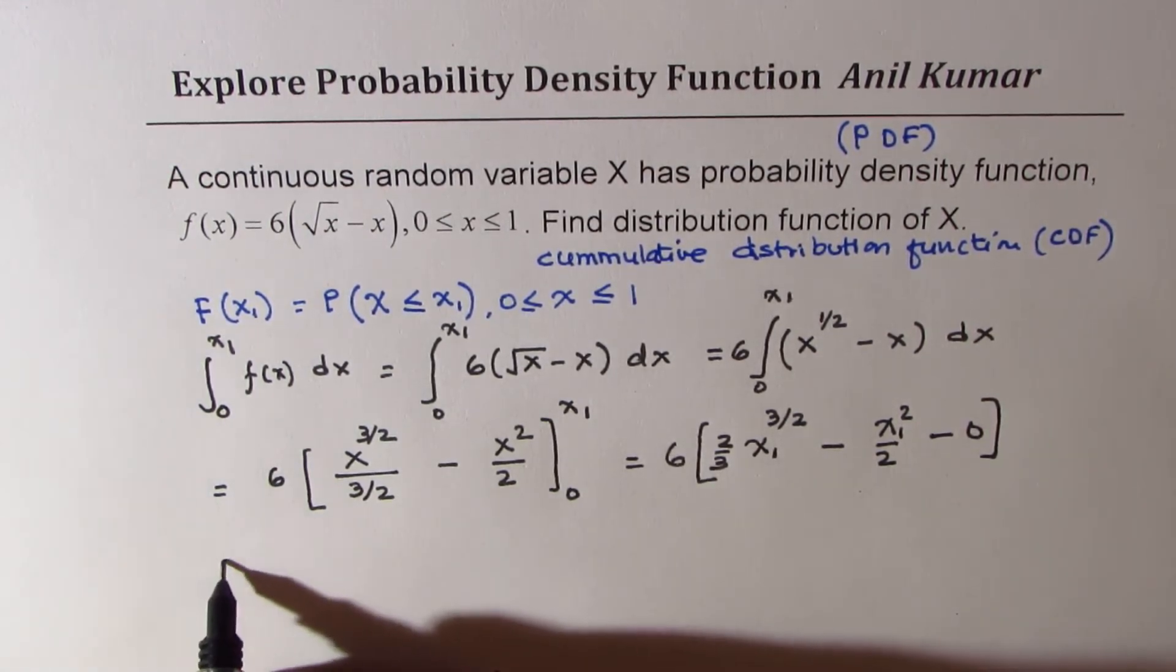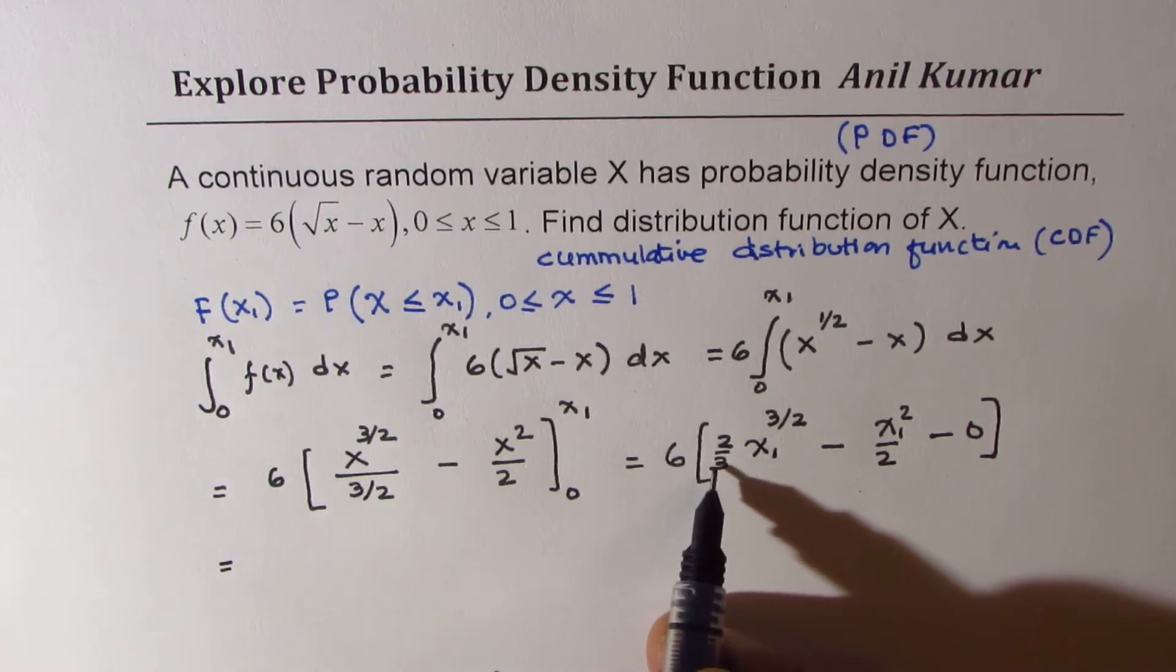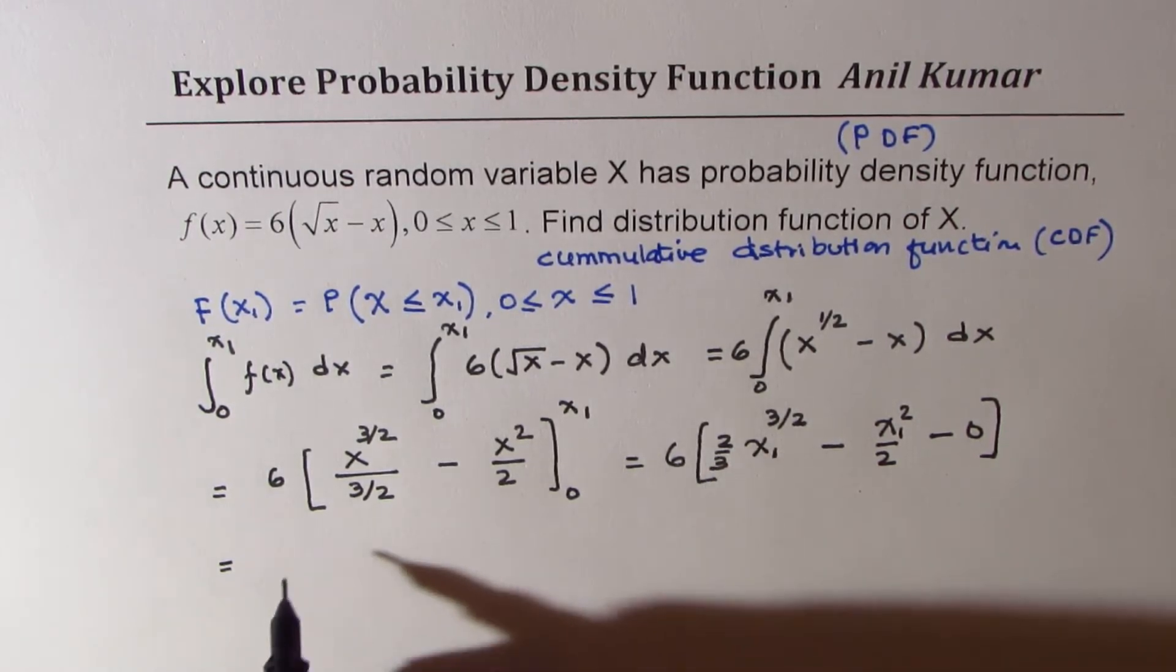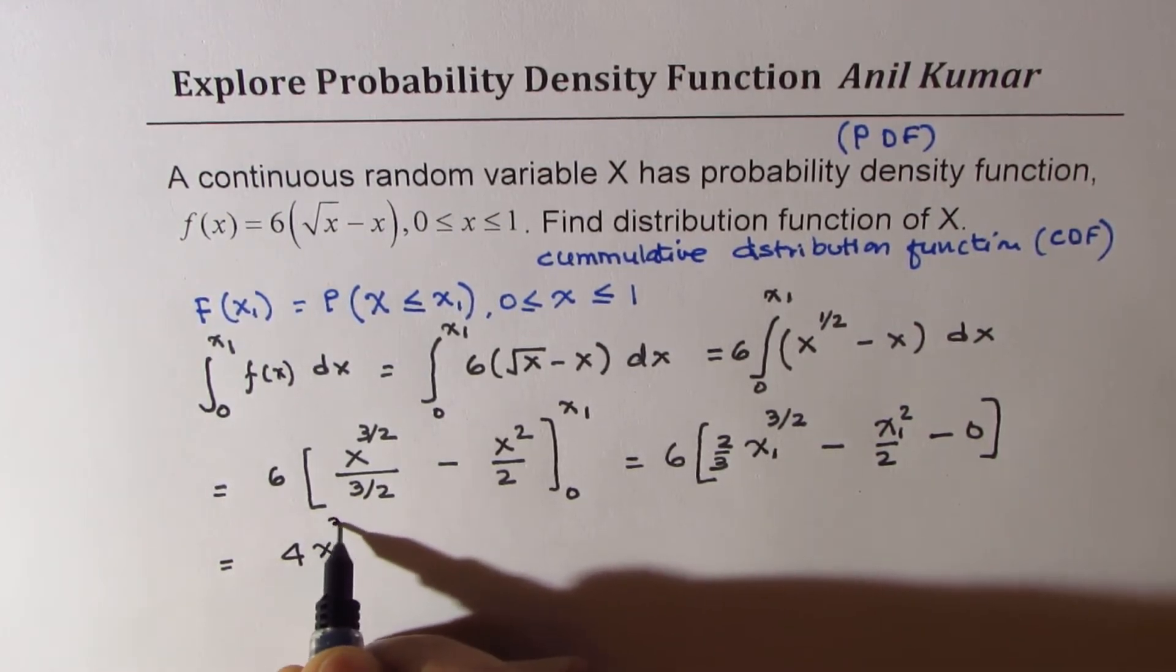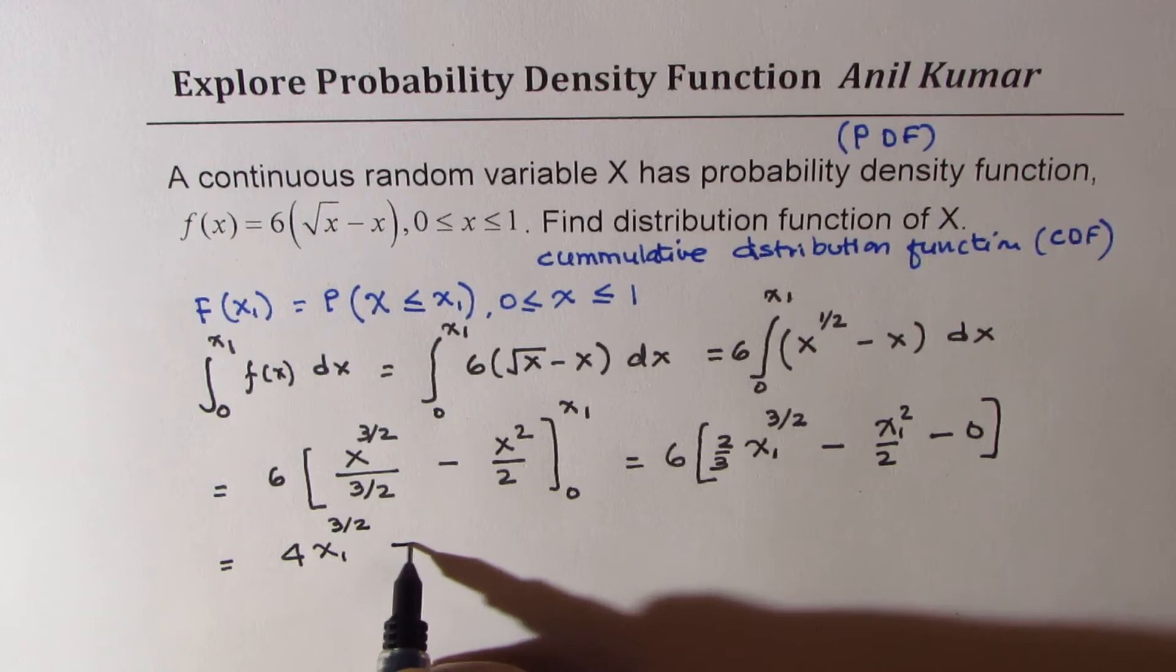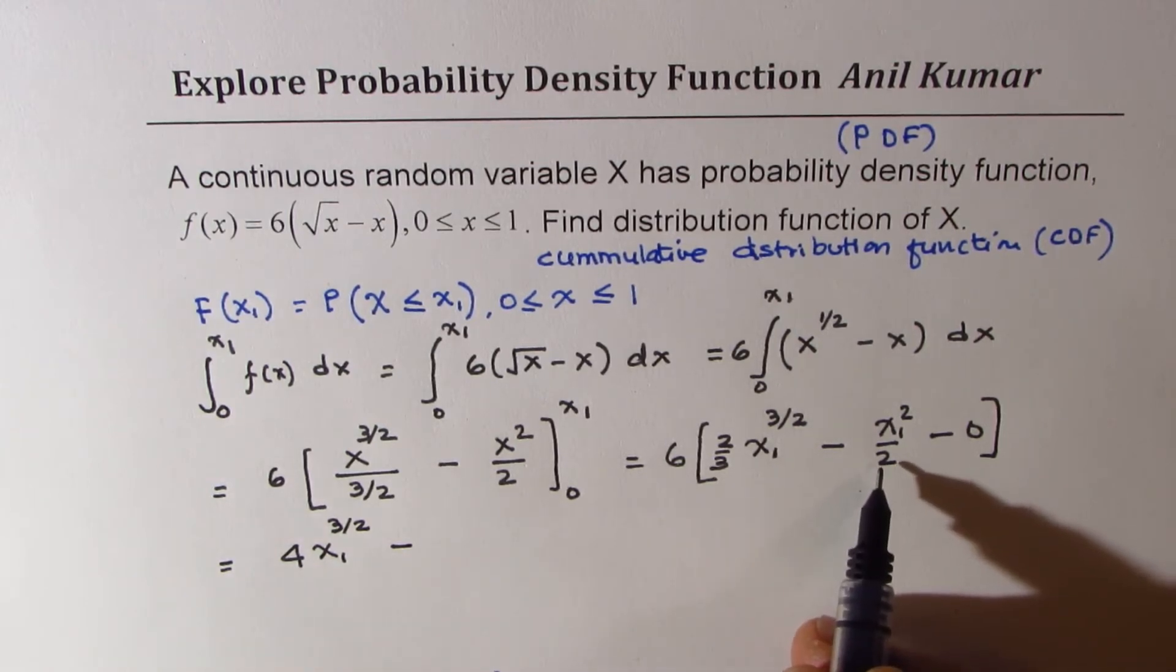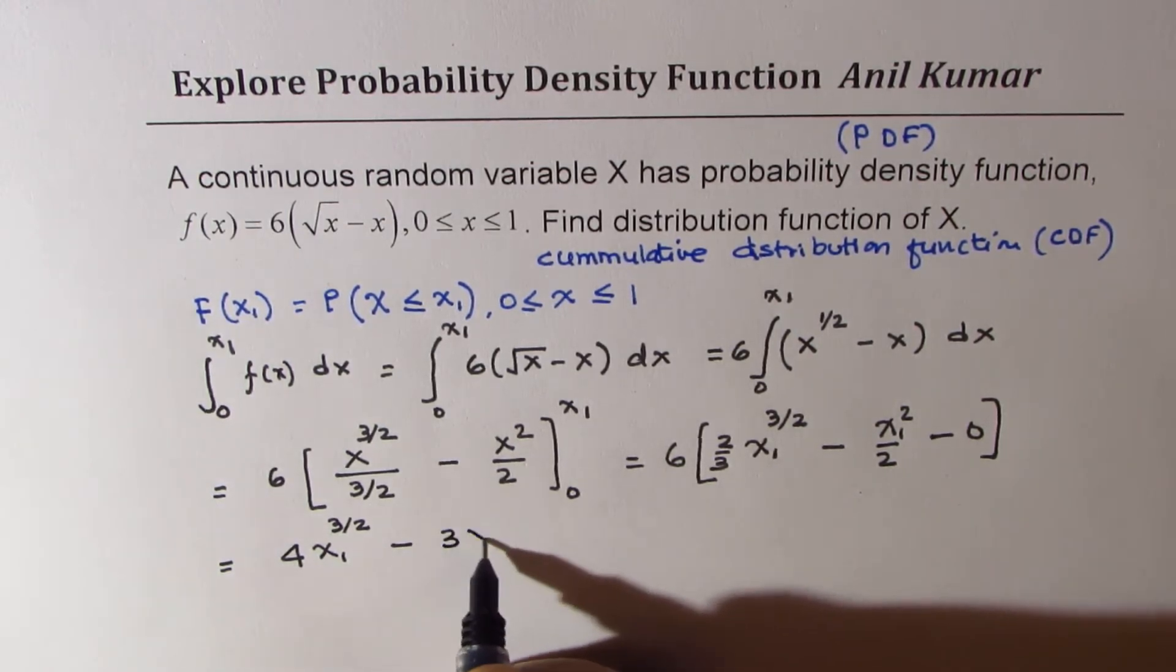Open the bracket and simplify. So when you multiply by 6, you get 4 x1 to the power of 3 by 2, minus 3 x squared.